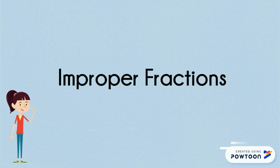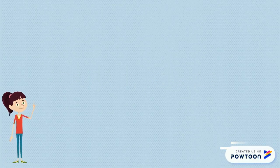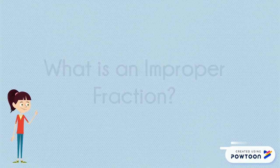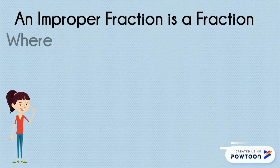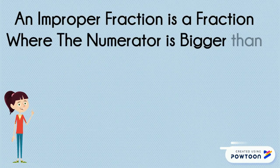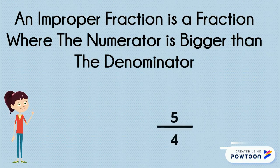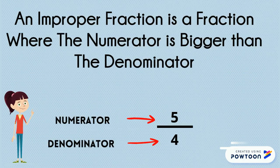Improper fractions. What is an improper fraction? An improper fraction is a fraction where the numerator is bigger than the denominator, such as 5 over 4. 5 is the numerator and 4 is the denominator.